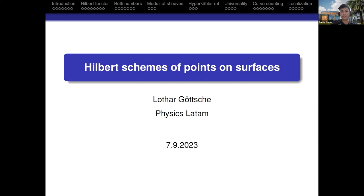He is author of several influential works in algebraic geometry, and also author of two books called 'Hilbert Schemes of Zero-Dimensional Sub-Schemes of Smooth Varieties' and another one called 'Fundamental Algebraic Geometry: Grothendieck's FGA Explained'. He has several series of online lectures at ICTP covering courses like algebraic geometry and abstract algebra, and many others that you can check on YouTube. It is an honor to have him with us today, and thank you for accepting the invitation.